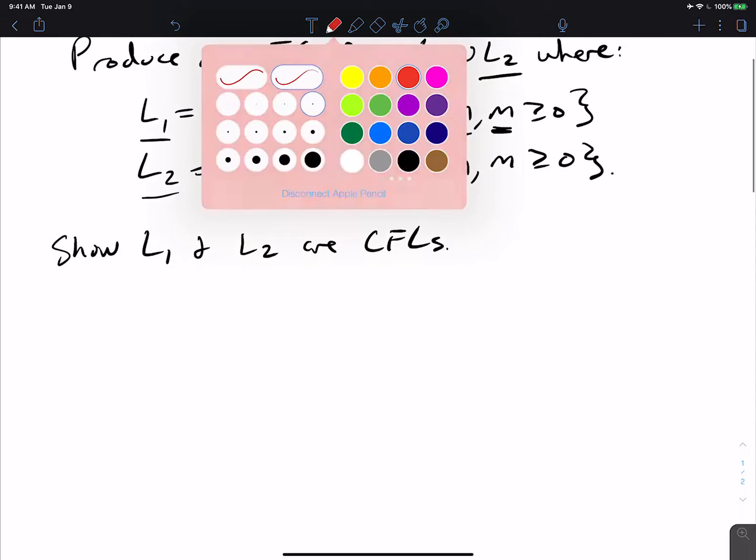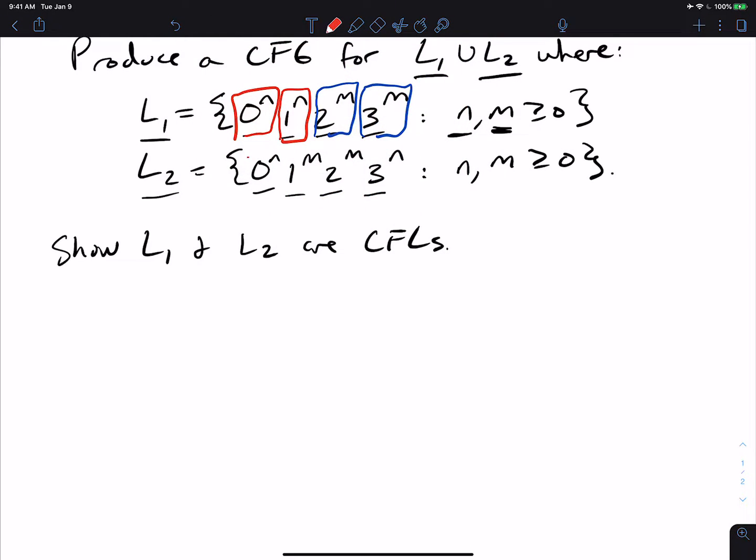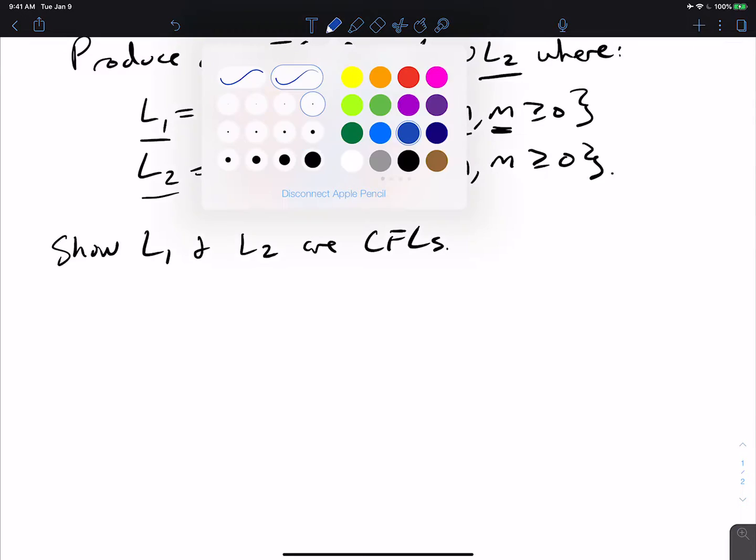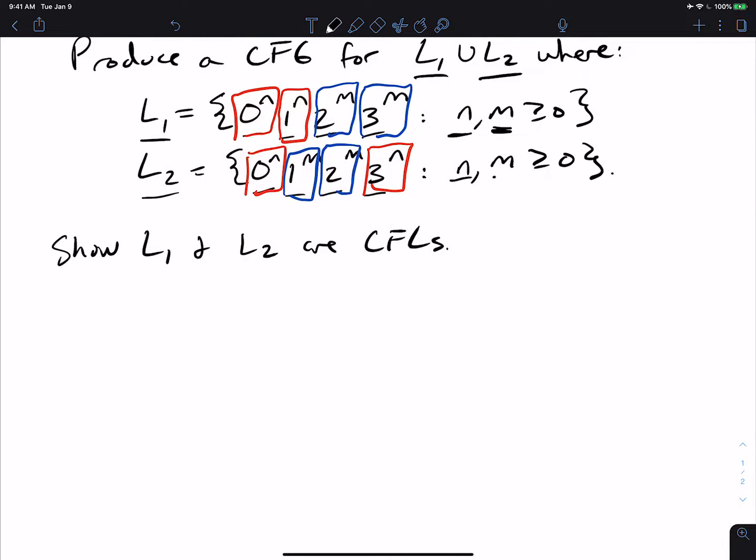And for the second language, the ns are at the front and the end of the string, and the ms are adjacent to each other. And again, in this case, n and m do not have any relation to each other. They can be anything they want.